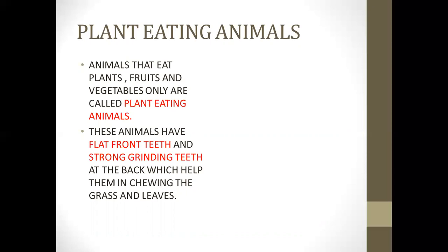So these animals have flat front teeth and strong grinding teeth at the back which help them in chewing the grass and leaves. For example, buffalo, goat, elephant, etc.